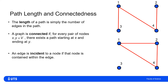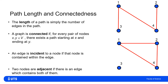We say that an edge is incident to a node if that node is contained within the edge. For example, node one is incident to the edge containing one and two, and the edge containing one and four in the lower graph. We also say that two nodes are adjacent if there is an edge which contains both of them.